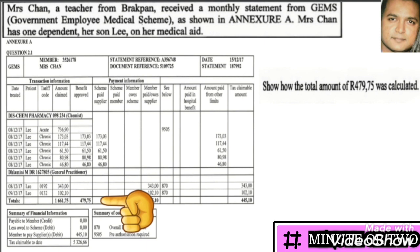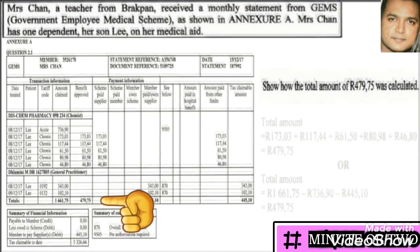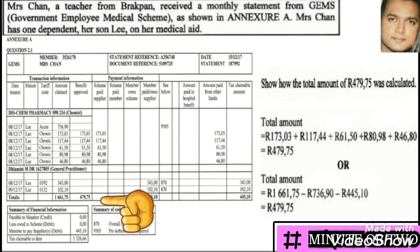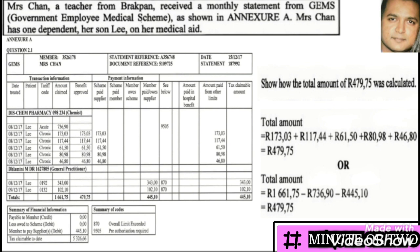Show how the total amount of 479.75 was calculated. Towards the bottom of the big table you'll find the totals, including 479.75. Looking at that column, the amounts above it are all totals from the chronic medication. Alternatively, you could take the amount claimed, subtract the acute amount of 736, subtract the monies paid directly to the supplier of 445, and you would arrive at 479.75.